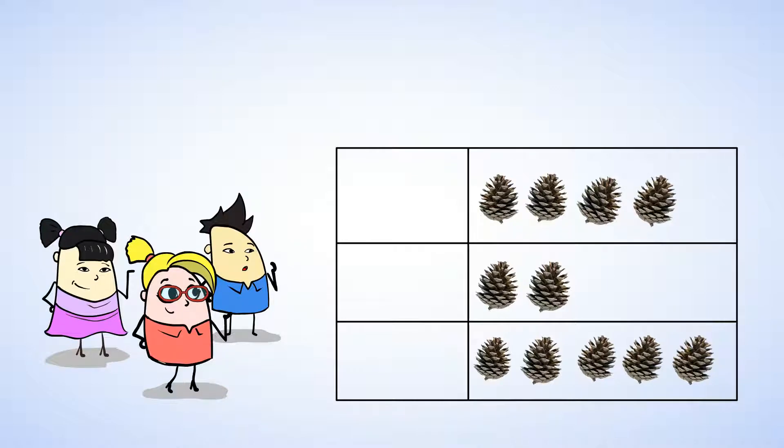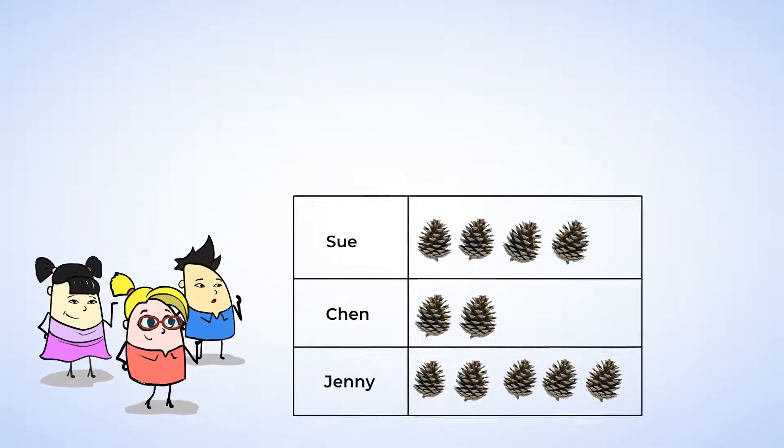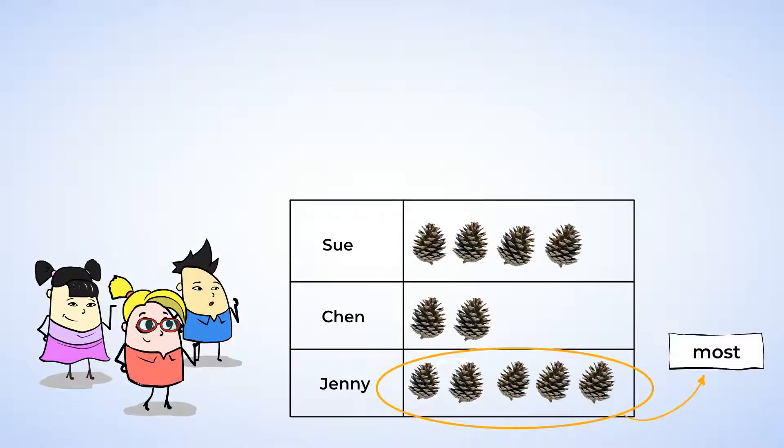Now we can see even more easily that Sue has four pinecones, Chen has two pinecones, and Jenny has five pinecones. It is also much easier to make some conclusions about this data. You can see that Jenny has the most amount of pinecones, and Chen has the least amount of pinecones. You can also compare more easily. For example, Sue has two more pinecones than Chen.